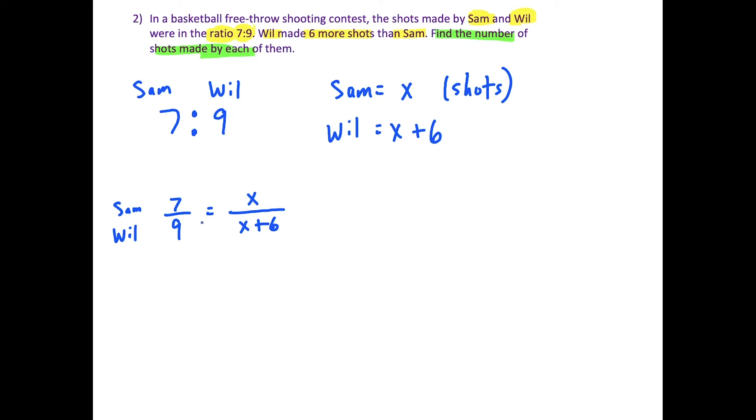So to solve this equation here, let's cross-multiply. We're going to multiply 9 times x, and that's equal to 7 times x plus 6. But just make sure to throw the x plus 6 in parentheses. We have to distribute here.